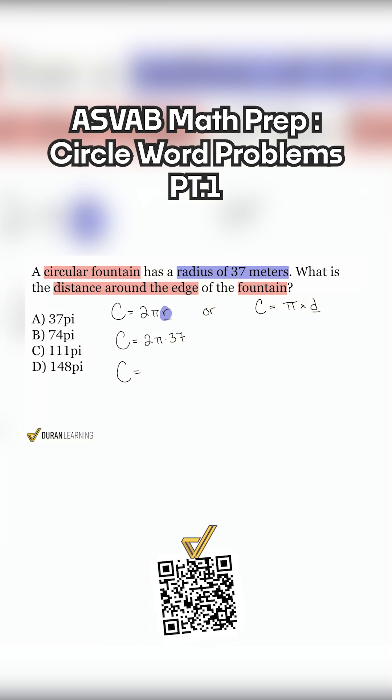circumference equals 2 times 37. We can fill that out right over here. 37 times 2, that's going to be 7 times 2 is 14. 3 times 2 is 6, carry the 1. That's 7. So our circumference will be 74 pi meters.